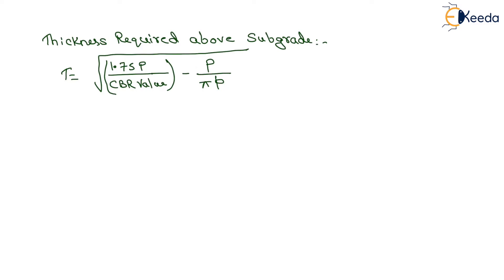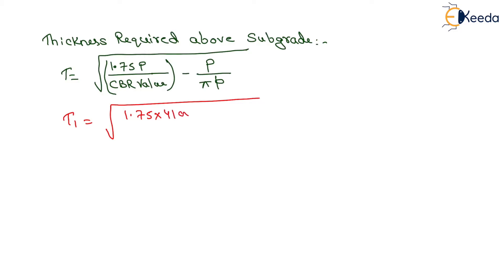The thickness above the subgrade can be determined by the formula: T1 = √(1.75P / CBR − P / (π × p)). So T1 = √(1.75 × 4100 / 4.38 − 4100 / (π × 7)).